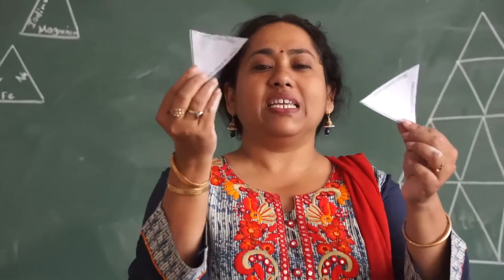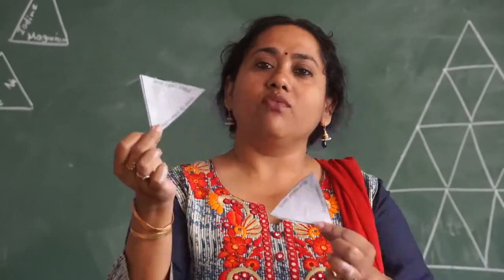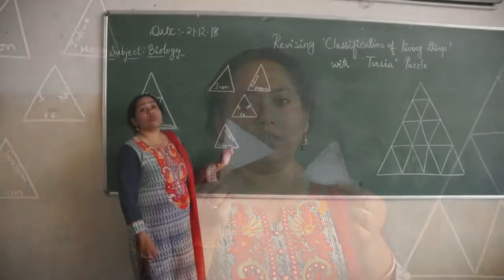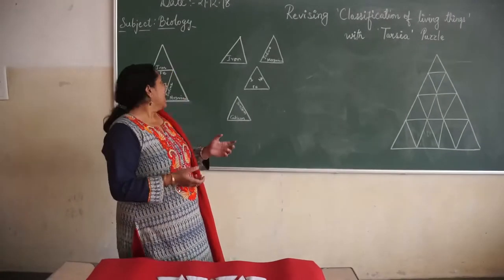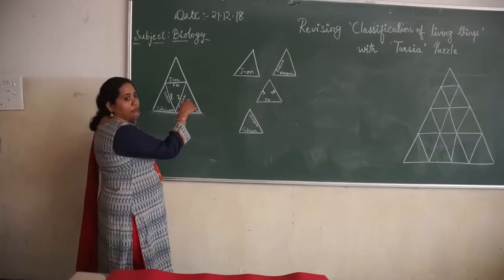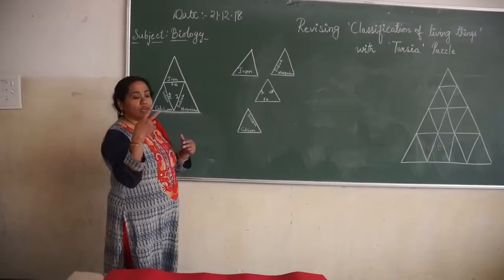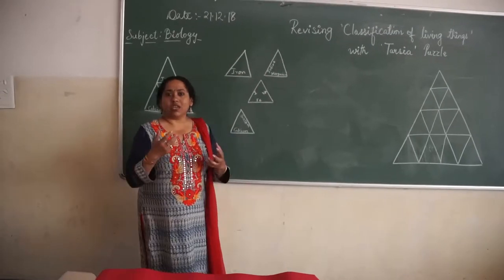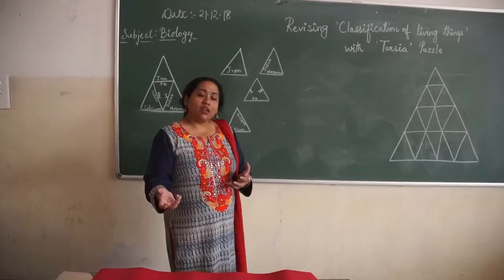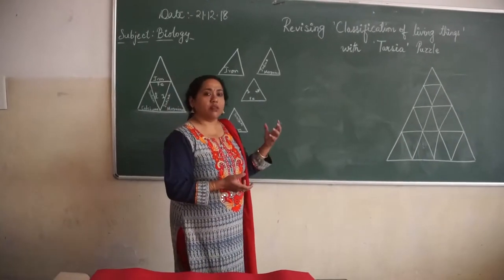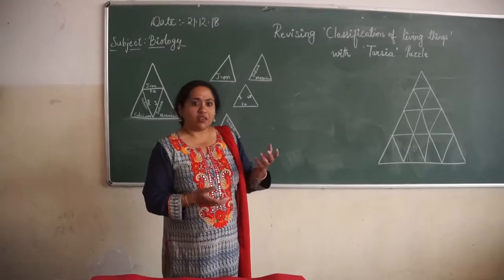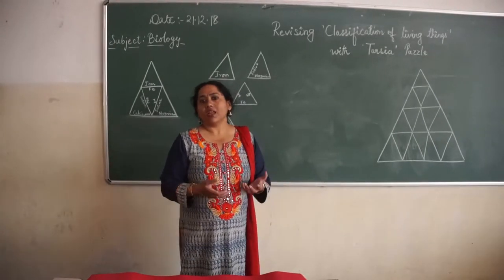I am going to give you 16 such small cards and you have to arrange them to make a bigger triangle. You can make your own Tarsia puzzle — first solve it on paper manually, then cut it into small triangles, jumble them, and ask your friends to rearrange. I have used a software which can be easily downloaded from the internet, absolutely free of cost. There are softwares available online for making Tarsia puzzles.